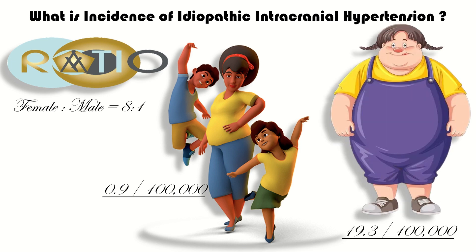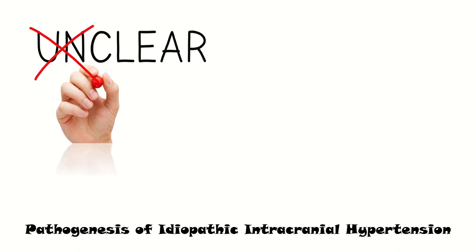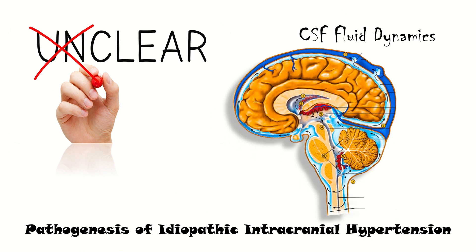The pathogenesis of idiopathic intracranial hypertension remains unclear. It is thought to be caused by disordered CSF dynamics. It is unclear from the evidence whether it results from enhanced CSF production at the choroid plexus or restricted CSF drainage at the arachnoid granulation tissue.